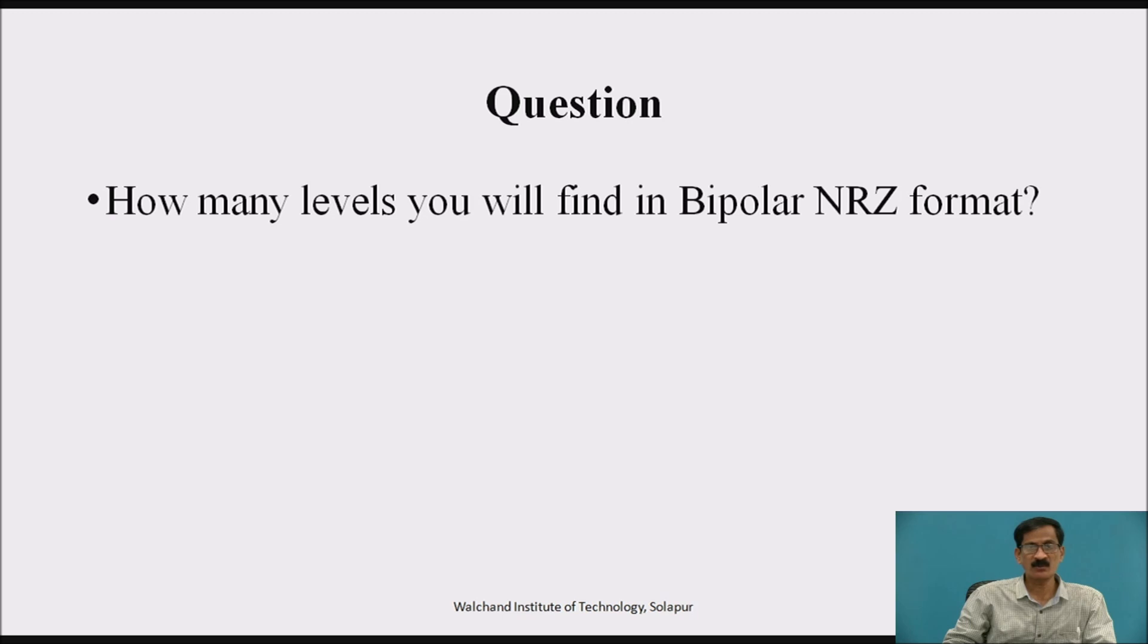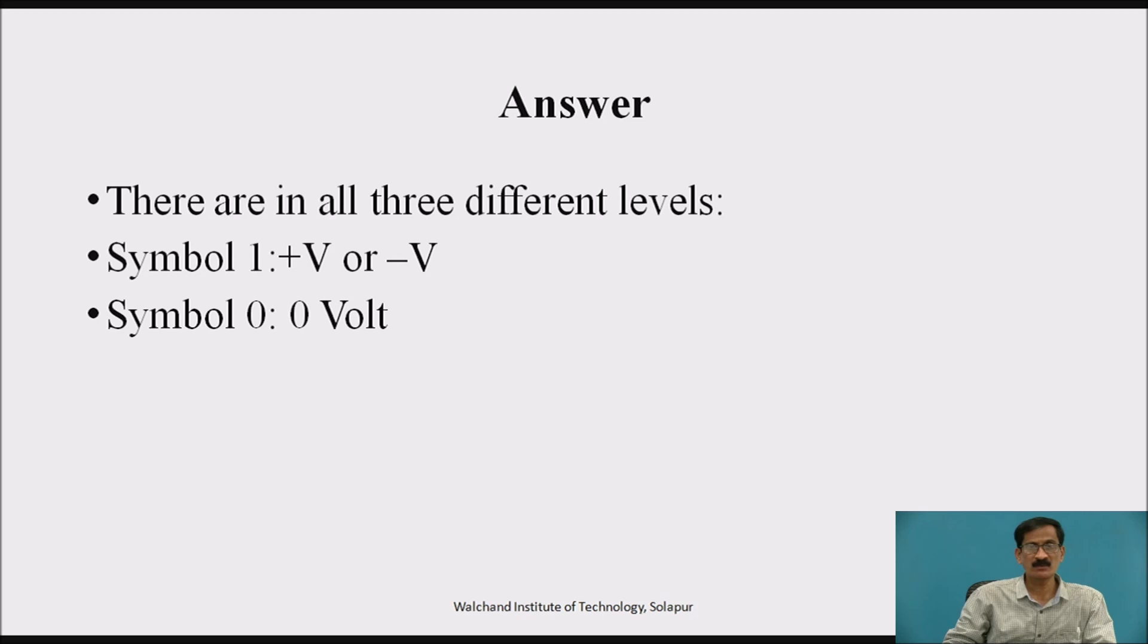Now, the question: how many levels you will find in bipolar energy format? There are actually 3 levels that is symbol plus V, 0 volt and symbol minus V. For symbol 0 it is 0 volt, symbol 1 is plus V and minus V.